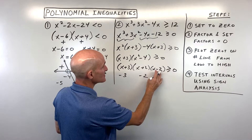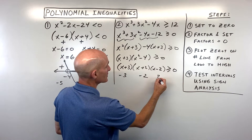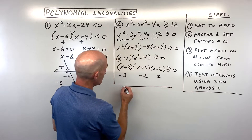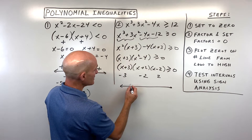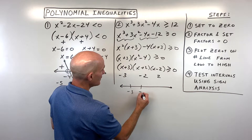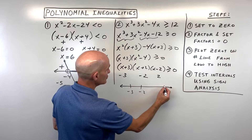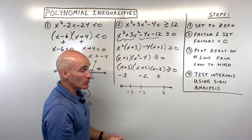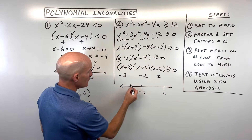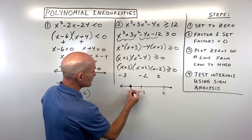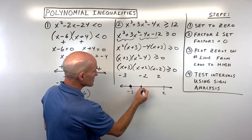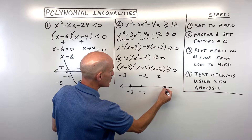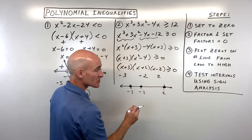Plot these on the number line from lowest to highest: negative 3, negative 2, and positive 2. Because the inequality is greater than or equal to 0, it equals 0 at each zero, so those are closed circles. We'll pick a test point in each of the four intervals.